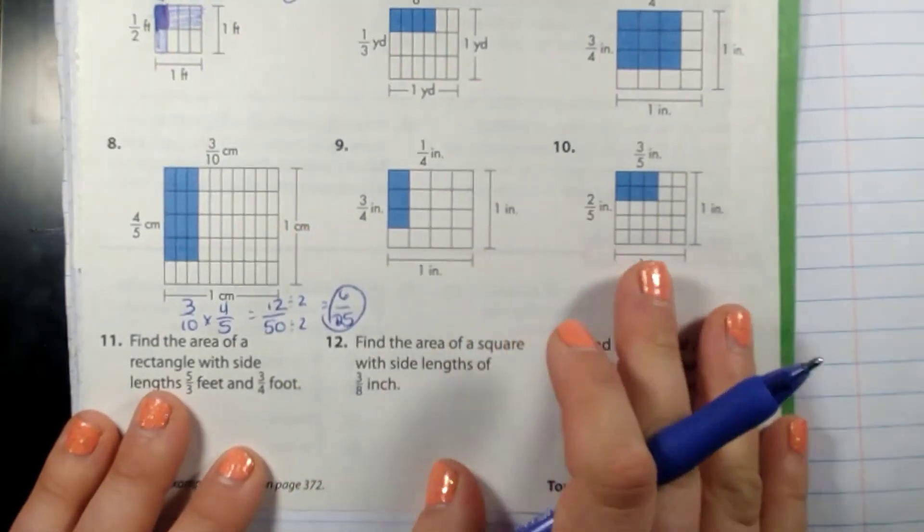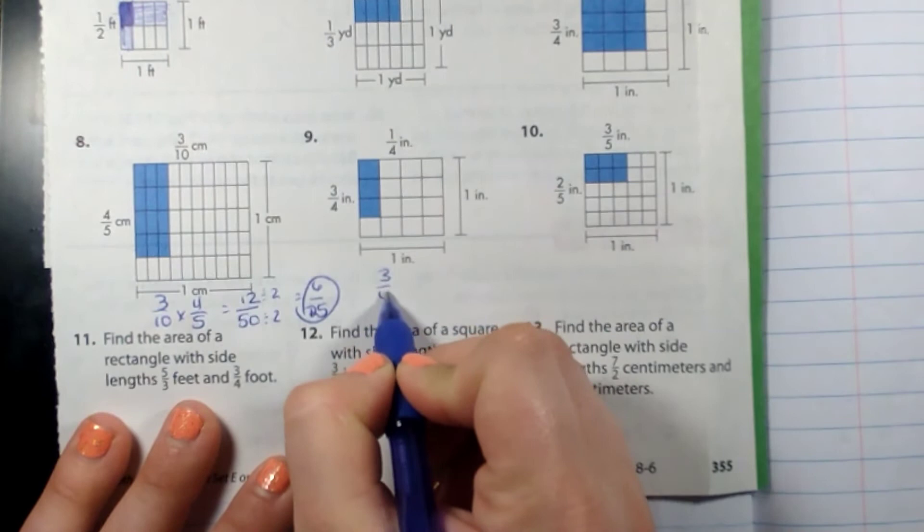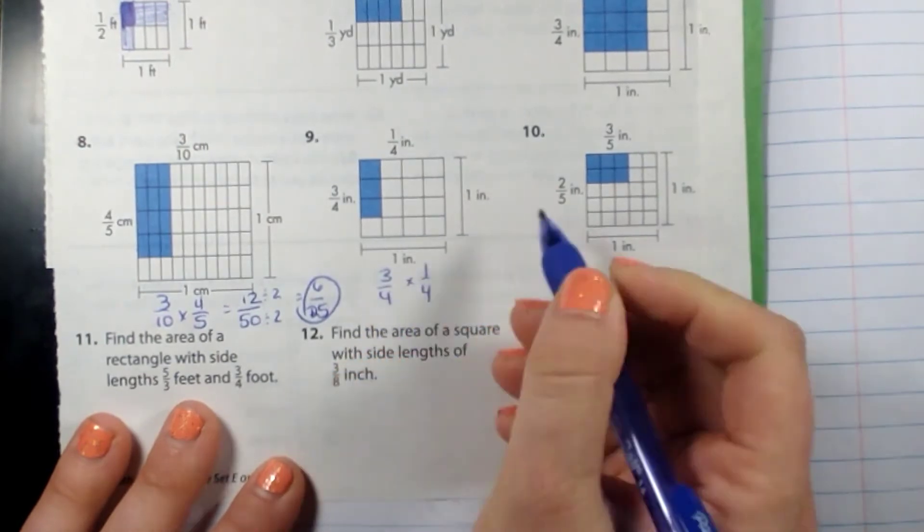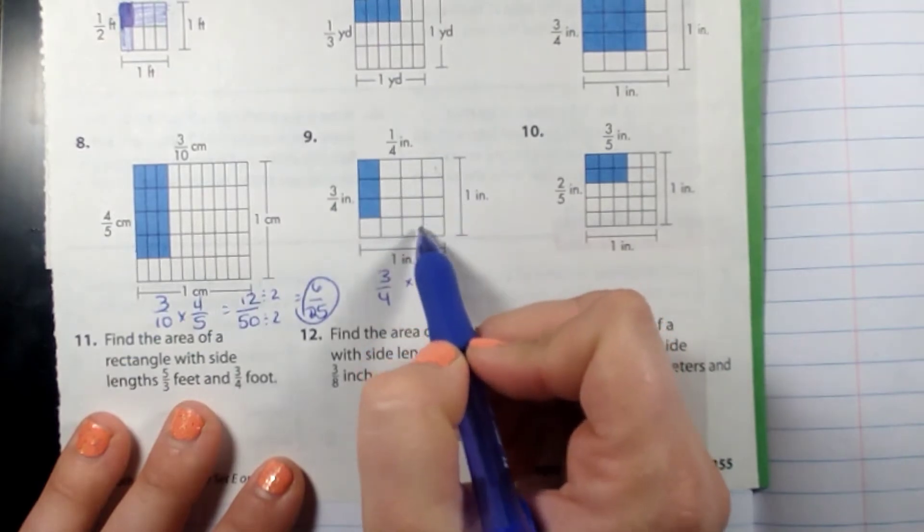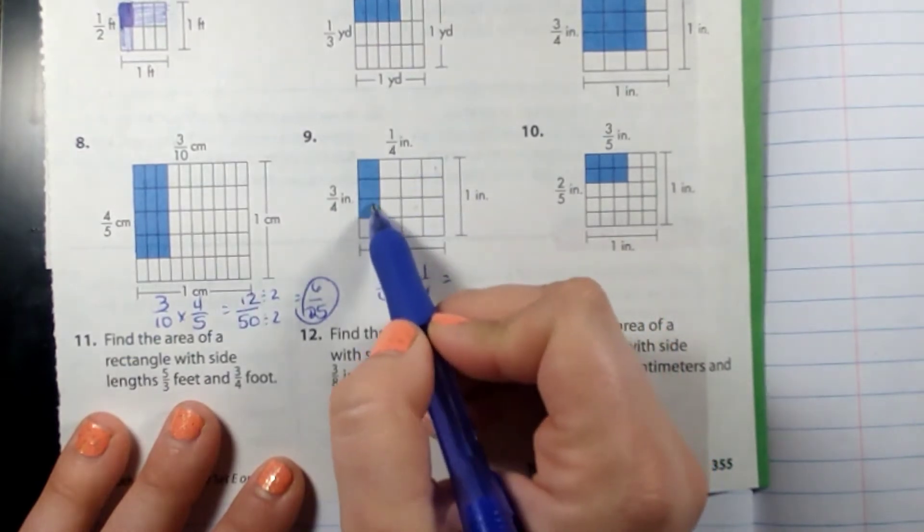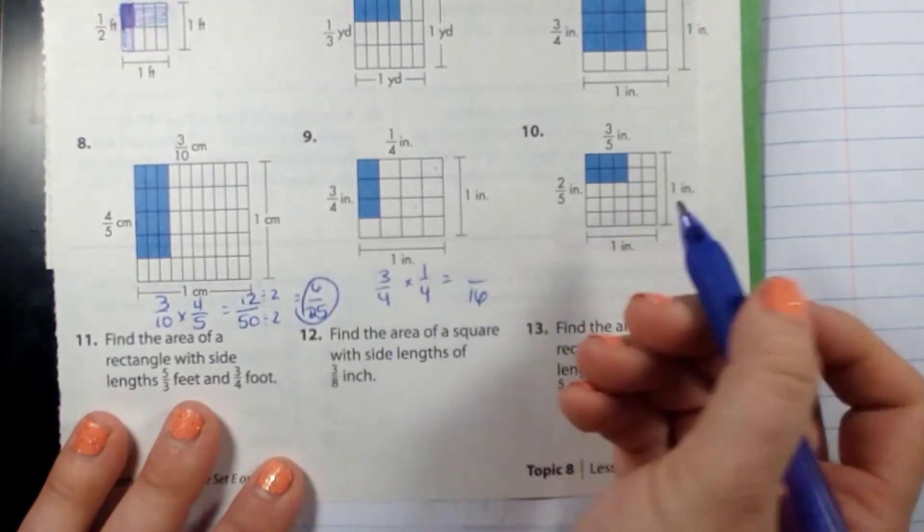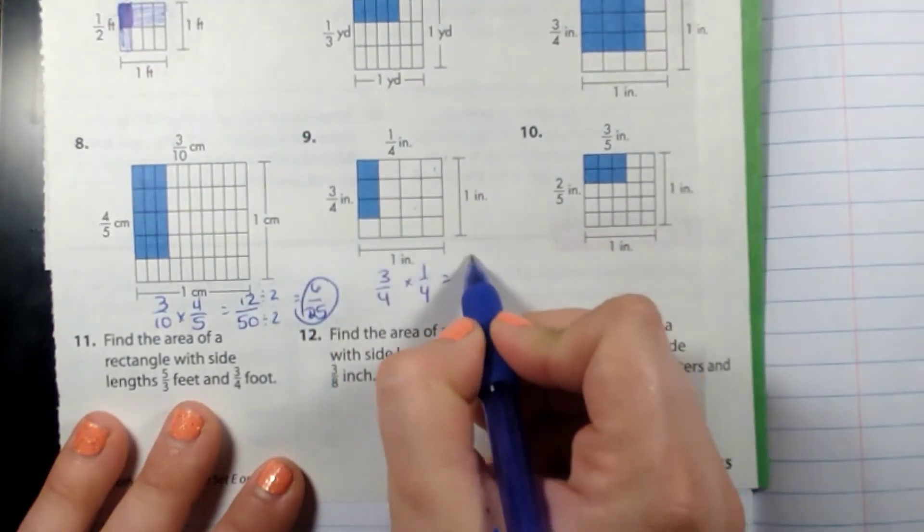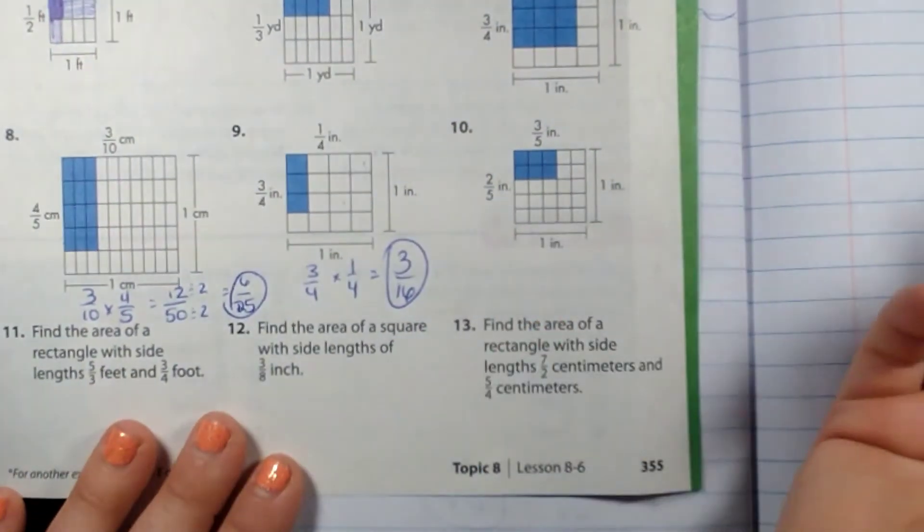Let's do this one here: three quarters times one fourth equals, let me see if I can guess. One, two, three, four, five, six, seven, eight, nine, ten, eleven, twelve, thirteen, fourteen, fifteen, sixteen. Four times four is sixteen, and then three times one is three, so it's supposed to be three sixteenths of an inch.